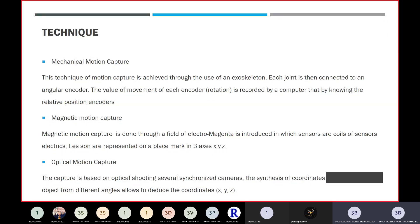The second technology is magnetic motion capture. Magnetic motion capture is done through a field of electromagnetics where sensors are coils of sensor electric. The sensors are represented on a place mark in three axes XYZ.